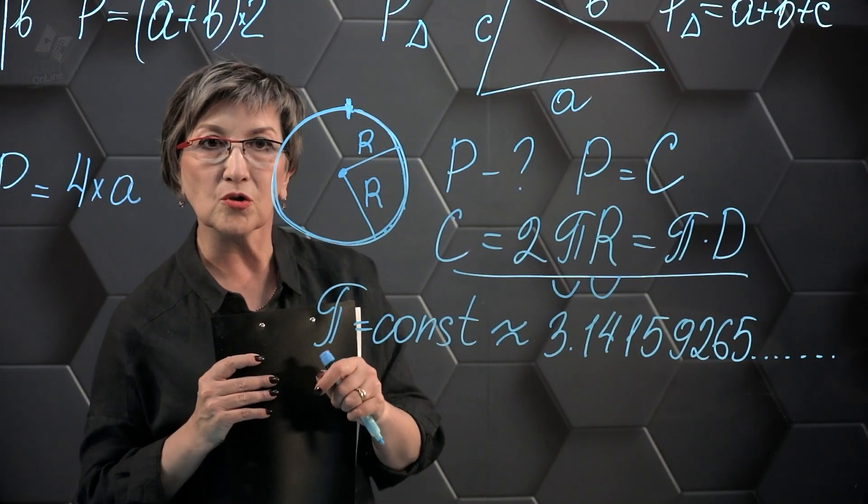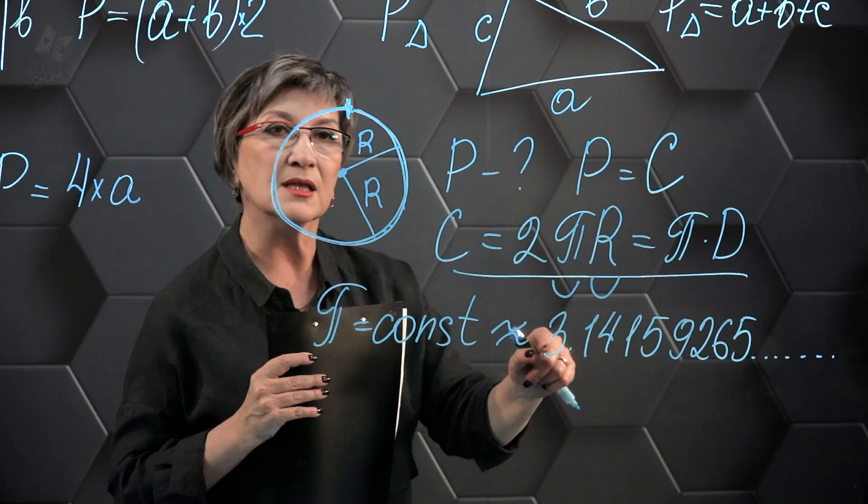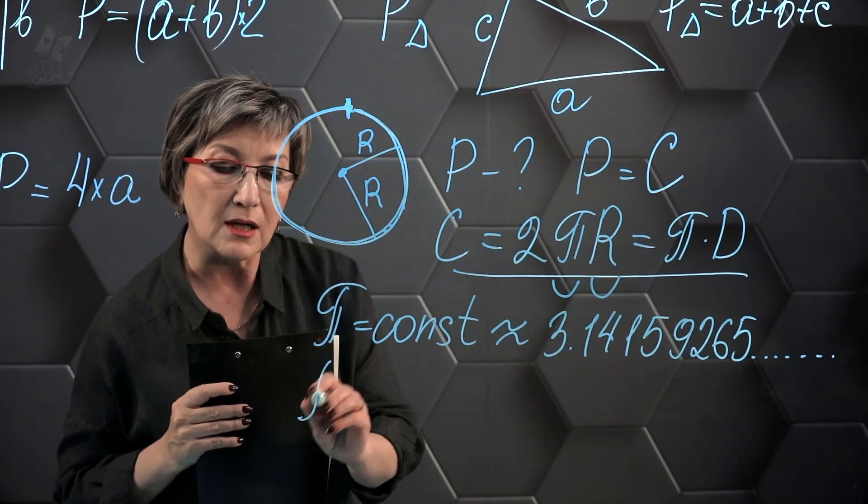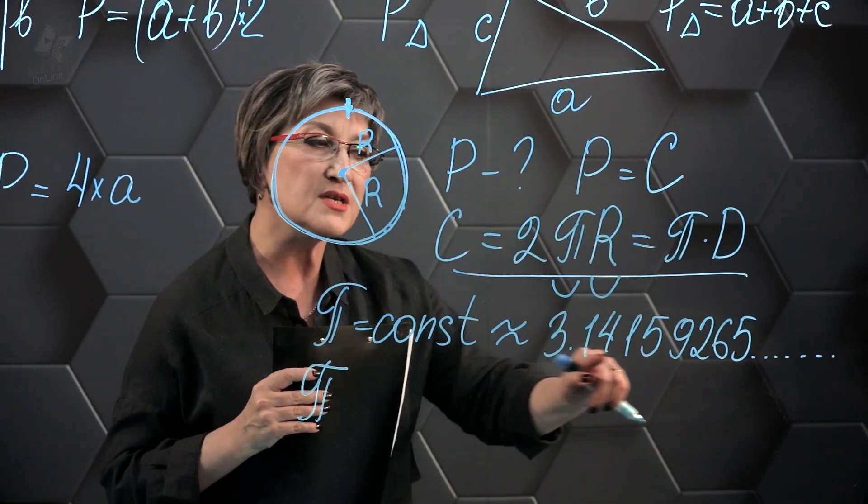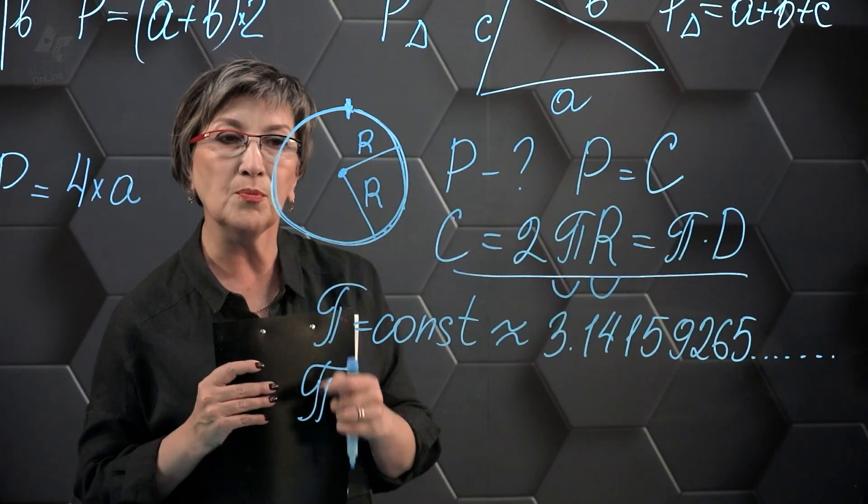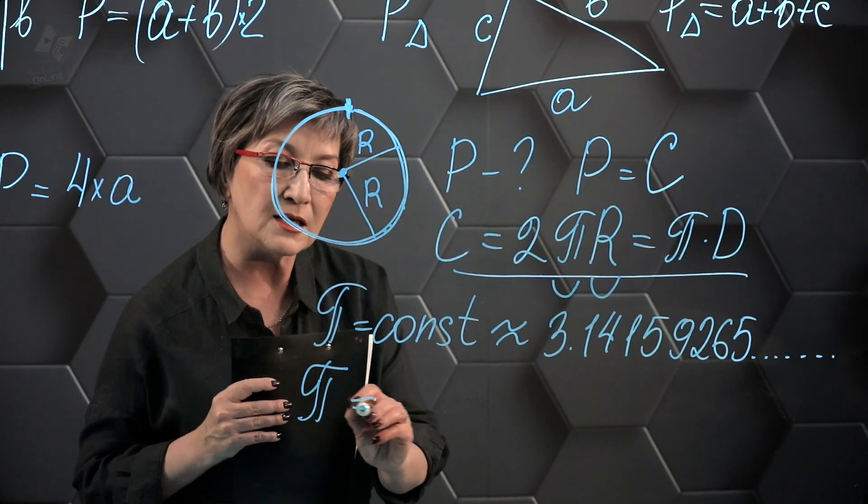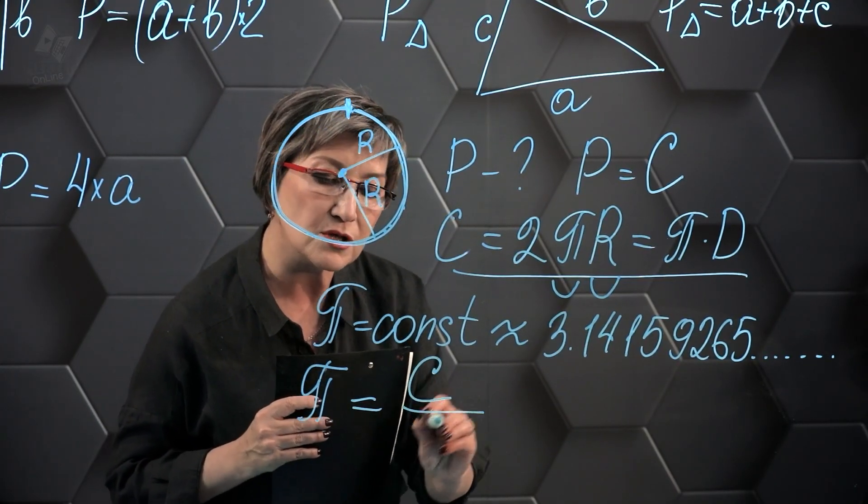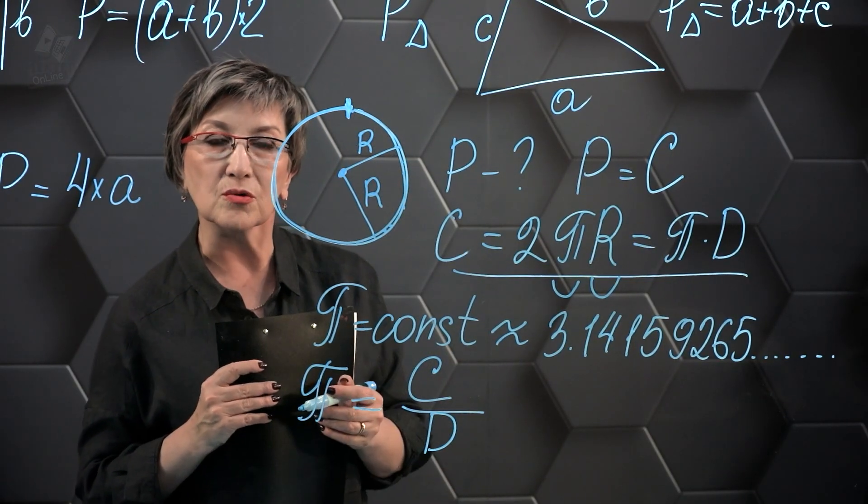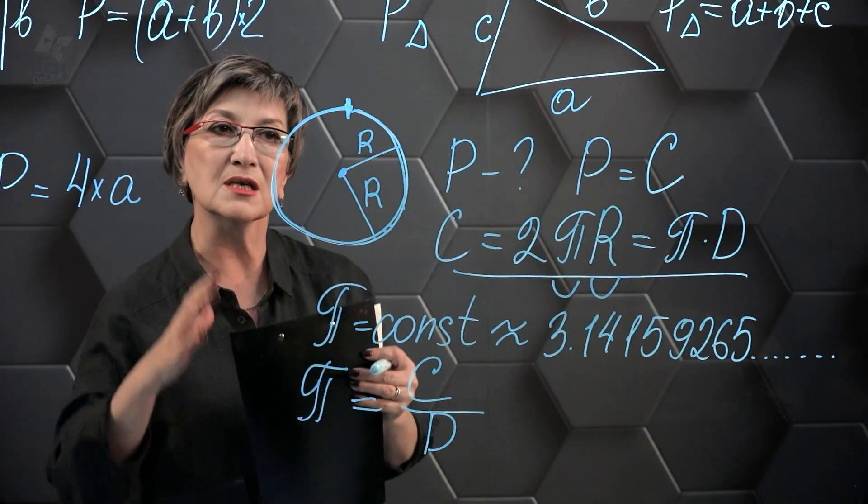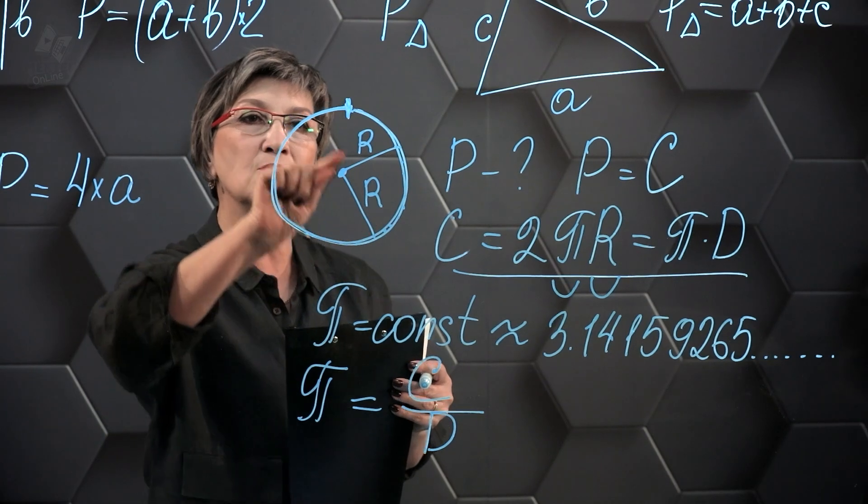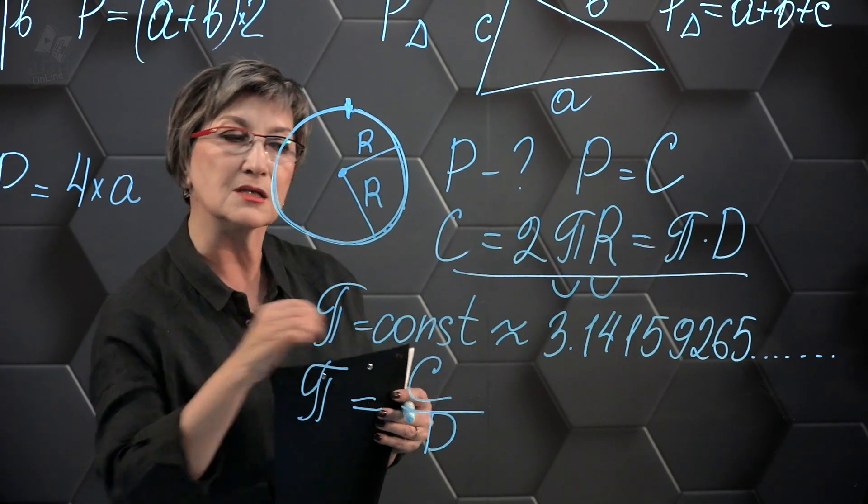But where did we take this value for the number π? The fact is that no matter what circle we take, the ratio of the circumference to the diameter will always be equal to this number. If I take this circle and count the length of the circle and divide by the diameter, I get the number 3.1415...